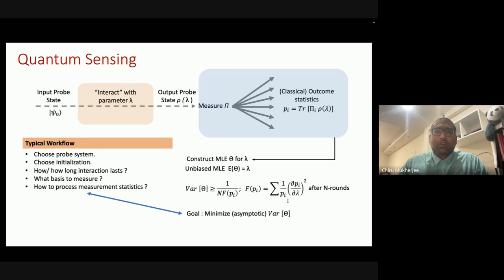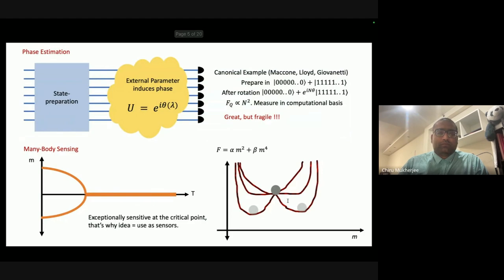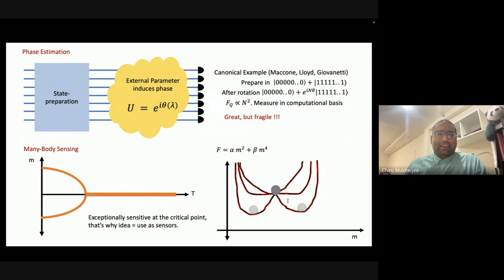The Fisher information as a proxy for sensing precision works in the frequentist picture where the parameter is assumed to have a critical value and we construct point estimators. This is the asymptotic limit; for finite statistics the Cramér–Rao bound may not be tight, and Bayesian estimation is an alternative. But what we will be talking about is this frequentist, point-estimation paradigm.